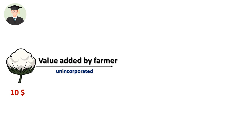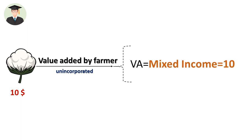Cotton production is an agricultural production. According to the SNA 2008 standard, that is considered as unincorporated, and the income identity is mixed income. The value of one unit of cotton is $10.